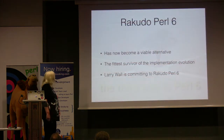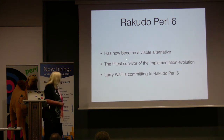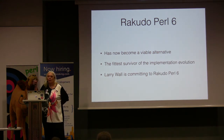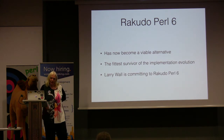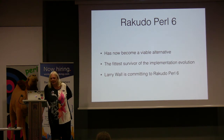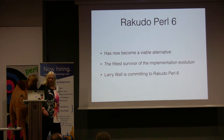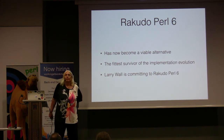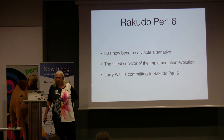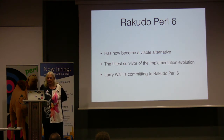Especially now that Rakudo Perl 6 has become a viable alternative. It is actually the fittest survivor of the implementation evolution. If you look at the implementation of Perl 6, there have been very many iterations — between 4 and 6 — and this one is coming on top. And even Larry, who has always been outside of the evolution stuff, has now started committing to Perl 6 for real, and not just the specs.